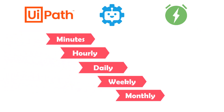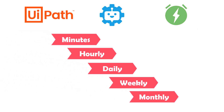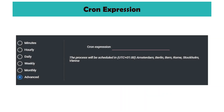With the standard functions you can adjust a lot, but when it comes to any complex time, these functions are not enough. Therefore there is the option to set the times with cron expression. Cron is a software utility, present in Unix-like operating systems, used for time-based scheduling.